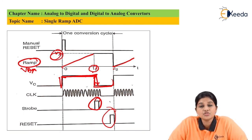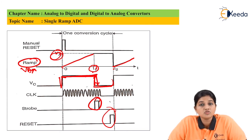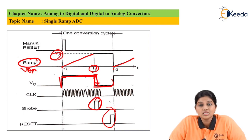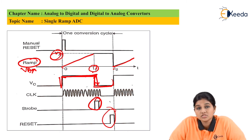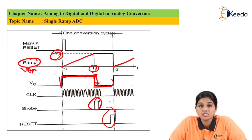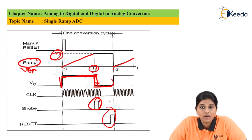The advantages of the single slope ADC are that it produces a linear voltage with respect to time and frequency, and its output voltage is unaffected by sudden changes in the input signal. However, it has disadvantages: it cannot provide a stable output, as the output is easily affected by changes in temperature and component values, which produces errors. Additionally, the circuit has finite gain, which also produces errors. These disadvantages can be overcome by modifying the circuit, leading to the dual slope ADC.